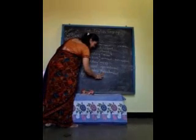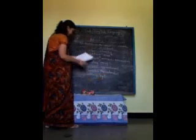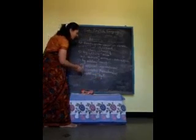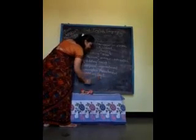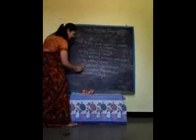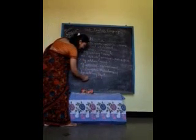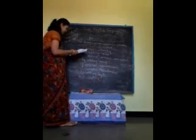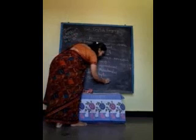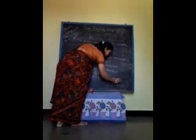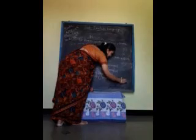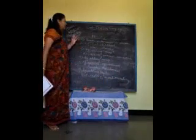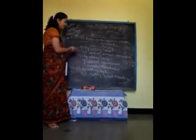The next way is by adding '-ity'. For example, 'real' becomes 'reality', then 'moral' becomes 'morality'. So like this, we can form abstract nouns in various ways.